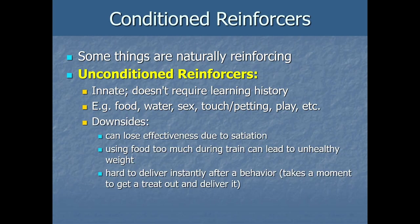The downside of using an unconditioned reinforcer during training is that it can quickly lose effectiveness due to satiation — getting too full. For example, using sex as a reinforcer, like rewarding a male rat for lever pressing with a mating opportunity, will reinforce the behavior, but then there's a significant delay before you can run another trial. Similarly, using food too much during training can lead to unhealthy weight. And depending on the unconditioned reinforcer, it may be hard to deliver instantly after a behavior — even food takes a moment, and that delay makes it less effective.